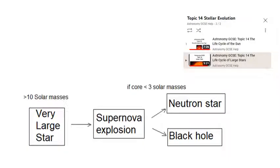A bit of revision: very large star, if it's bigger than 10 solar masses, then it will collapse very quickly and there will be a supernova explosion. What you are left with depends on the mass of the core. If the mass of the core is less than three solar masses, you get a neutron star. If it's bigger than three solar masses, you get a black hole.